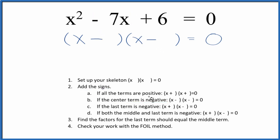Once we have those signs, we can find the factors for the last term, which is 6, and those factors should add up to the middle term. I know that 1 times 6 gives me 6, and 1 plus 6 equals 7. So I'll put a 1 here and a 6 here, and we're done.